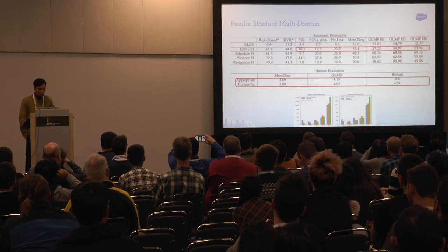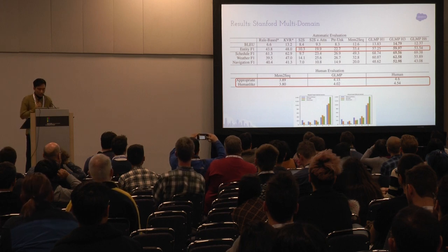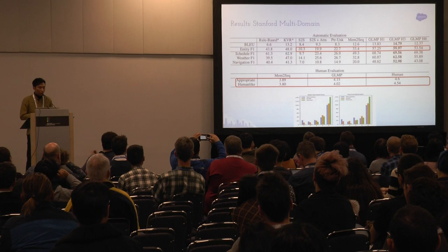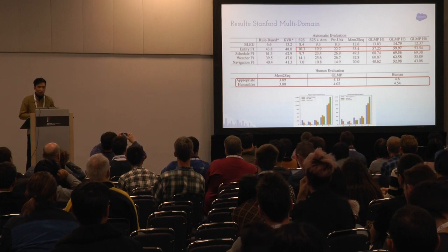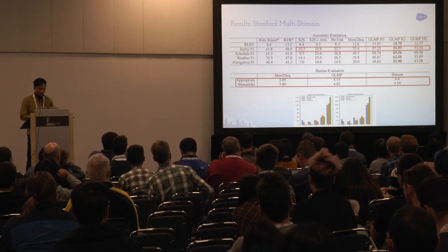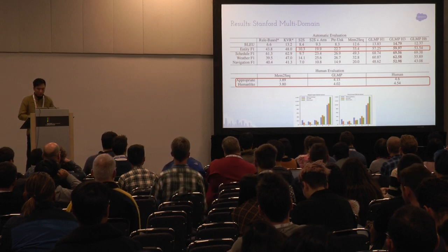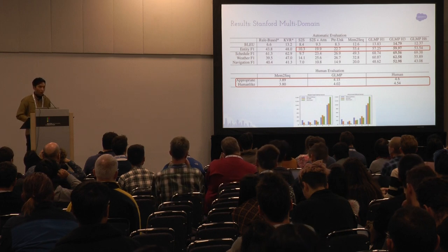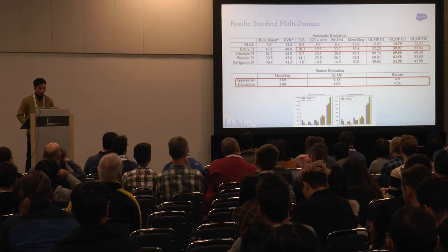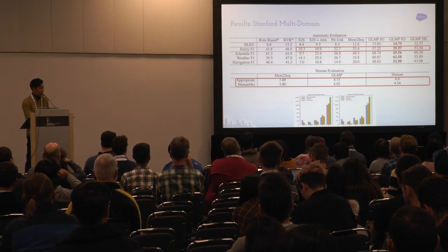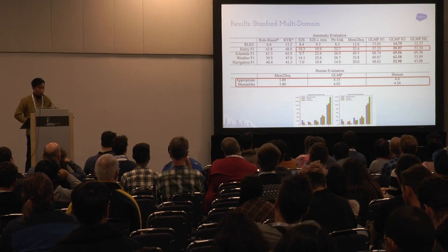On the Stanford Multi-Domain dataset, although we didn't achieve a large improvement in BLEU score — since even humans cannot get high BLEU scores in these cases — we observe a big improvement in entity F1 score, from around 30-something to 50-something. This improvement is largely due to the usage of our global memory pointer. We also performed human evaluation, which is consistent with our unsupervised metric findings, though there is still a gap between our model and human performance.